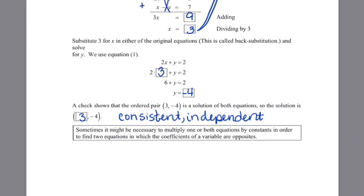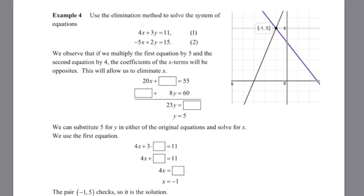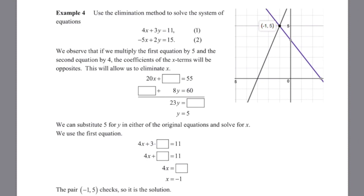Sometimes it's necessary to multiply one or both equations by a specific value so that the coefficients become opposites and cancel when added. For example, with 4x plus 3y equals 11 and negative 5x plus 2y equals negative 15, adding them directly won't eliminate any variable. But if we multiply the first equation by 5 and the second by 4, both will have 20x — one positive, one negative. Multiplying the first by 5 gives 20x plus 15y equals 55. Multiplying the second by 4 gives negative 20x plus 8y equals 60. Adding them: 23y equals 115.